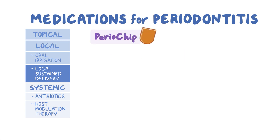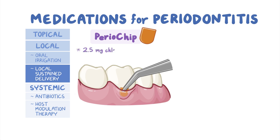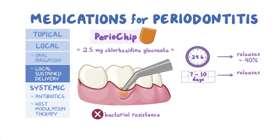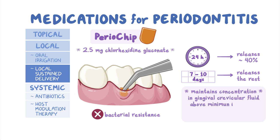Periochip is a small, biodegradable chip in the form of a thin wafer that contains 2.5 milligrams of chlorhexidine gluconate. Since chlorhexidine gluconate is an antiseptic agent, it's not associated with bacterial resistance. Once applied into the periodontal pocket, the chip starts to biodegrade, and within the first 24 hours it releases approximately 40% of chlorhexidine gluconate. Over the next 7 to 10 days, periochip linearly releases the rest of the chlorhexidine gluconate, maintaining the concentration in the gingival crevicular fluid above the MIC-90. This linear release is also referred to as the first-order release.